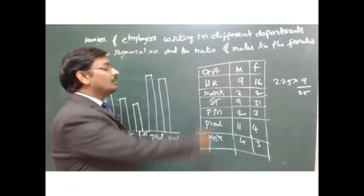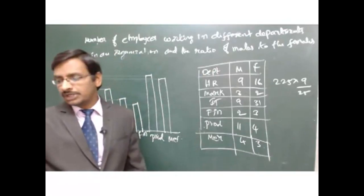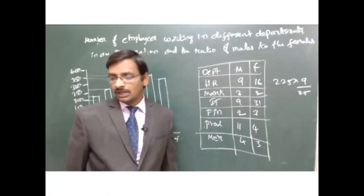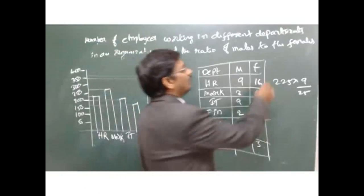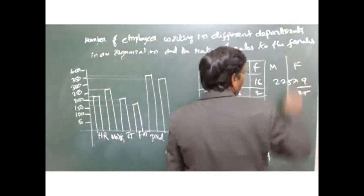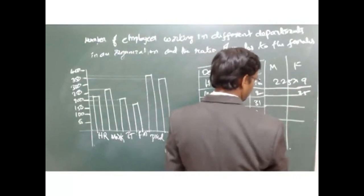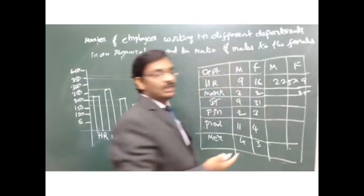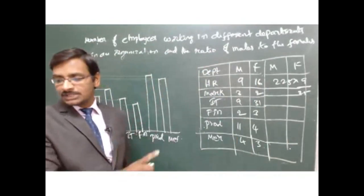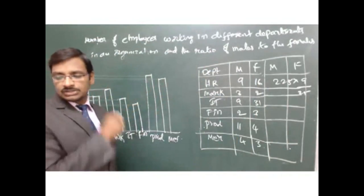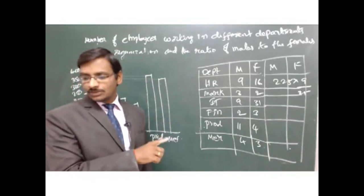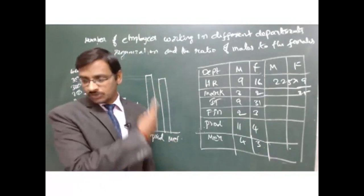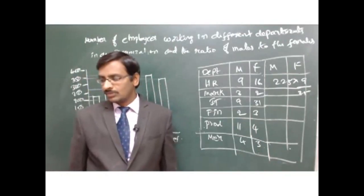The problem is that we have ratios - everything is a ratio. For example, 9 is to 16, or 3 is to 2, or 9 is to 31, and each department has a different ratio. So for each department you need to calculate the total male and female employees based on the total number and the given ratio.